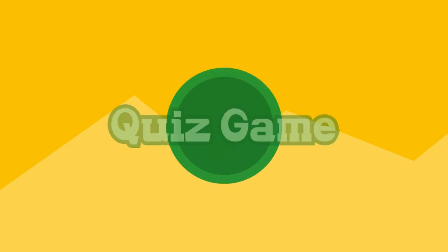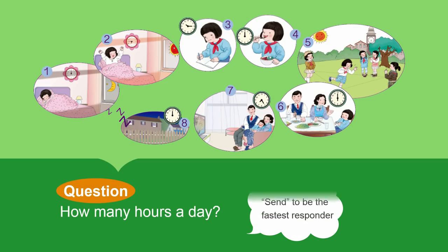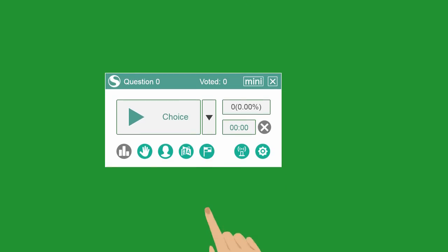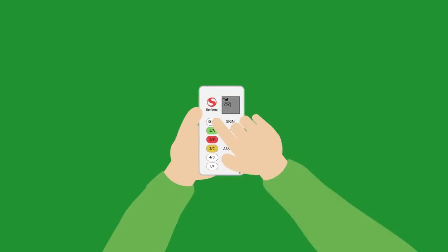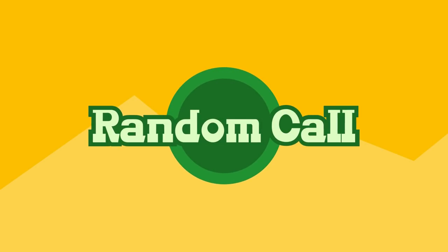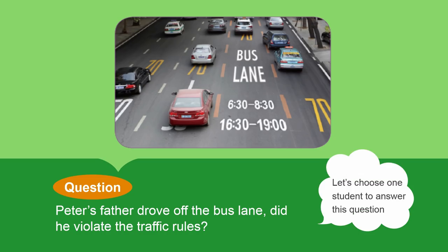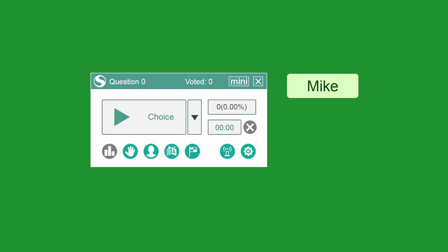The teacher can also start a quiz game to encourage students to answer questions in an interactive and entertaining way. Students press the button to be the fastest responder. The random call function of the software can help the teacher choose a student — a single press completes the selection process.